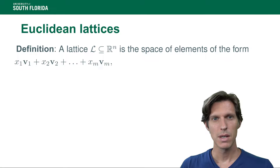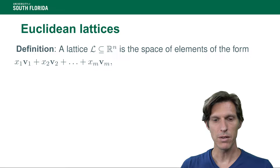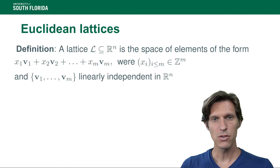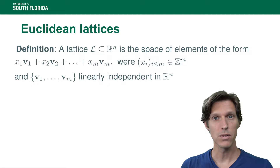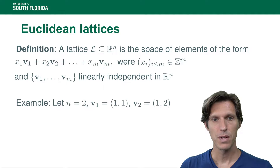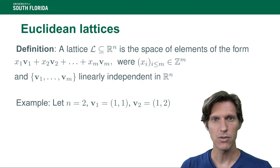So what is a lattice? Given some linearly independent vectors of R to the n, a lattice defined by those vectors is the integer linear combinations of all these vectors. So you can think of it as a vector space where we've replaced the field by Z, or in more mathematical terms, it's a Z module.